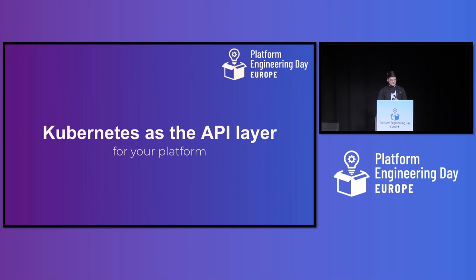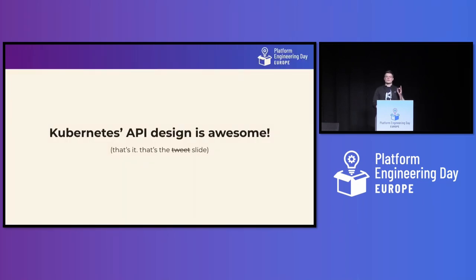Kubernetes as your API layer. A lot of you are probably already doing this, because operators have extended Kubernetes. And honestly, that's mostly because the Kubernetes API is kind of awesome — at least I hope that's the prevalent opinion. So maybe we'll do a show of hands: who of you likes to work with the Kubernetes API?